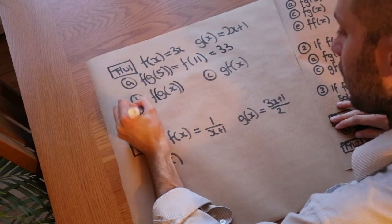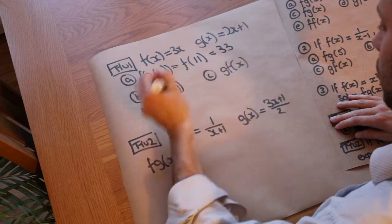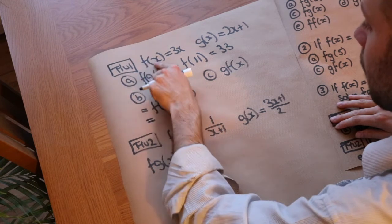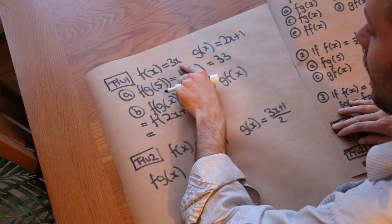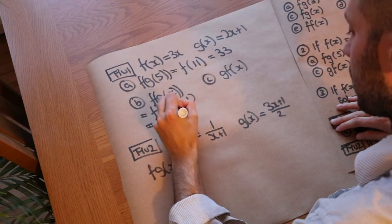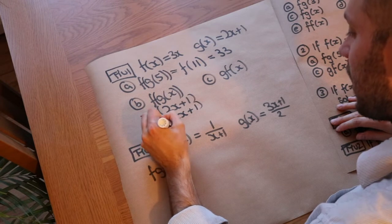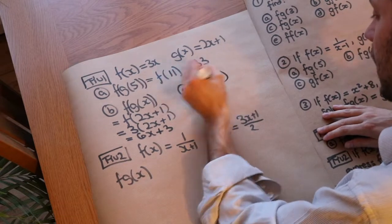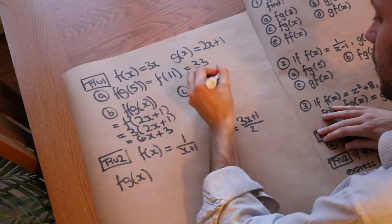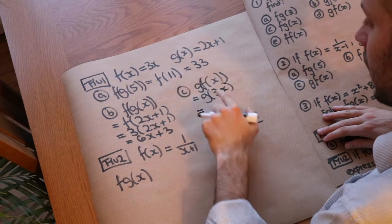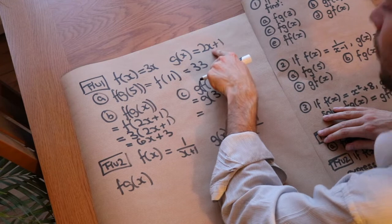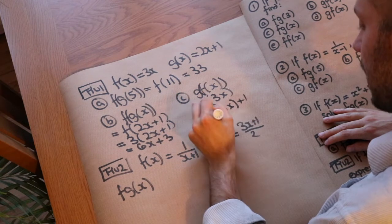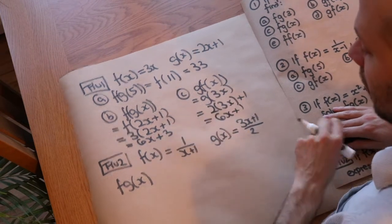For f(g(x)): g(x) = 2x + 1, so f(2x + 1) = 3(2x + 1) = 6x + 3. For g(f(x)): f(x) = 3x, so g(3x) = 2 times 3x plus 1 = 6x + 1. You can see they're similar but slightly different.